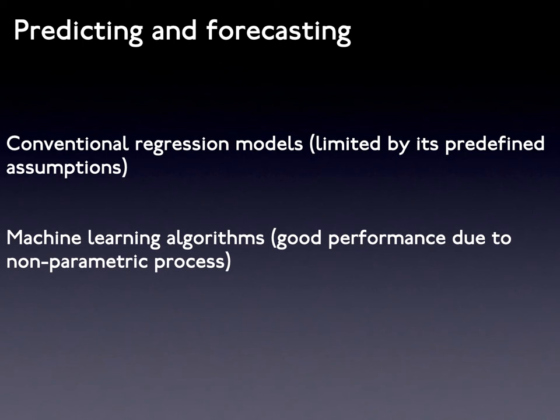Machine learning models are designed to improve the prediction accuracy with a non-parametric process. Without underlying functions, machine learning provides powerful algorithms for predictions and classifications. As one of the popular techniques in machine learning, ensemble learning combines the outputs of multiple statistical and machine learning models to obtain an improved prediction estimate and range.